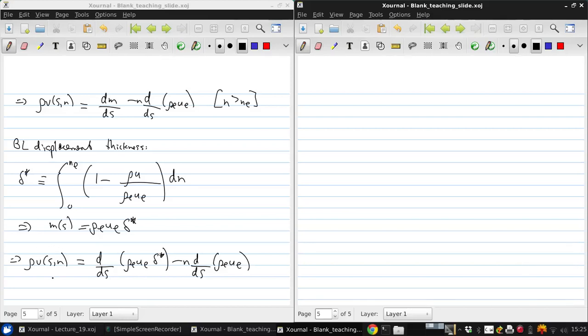Now that we have a condition that tells us what in the real flow ρV at s and n is in terms of the displacement thickness and the edge properties, we can think about developing an improved EIF. So something that will do better than our simple EIF, and this is going to be a displacement body model.